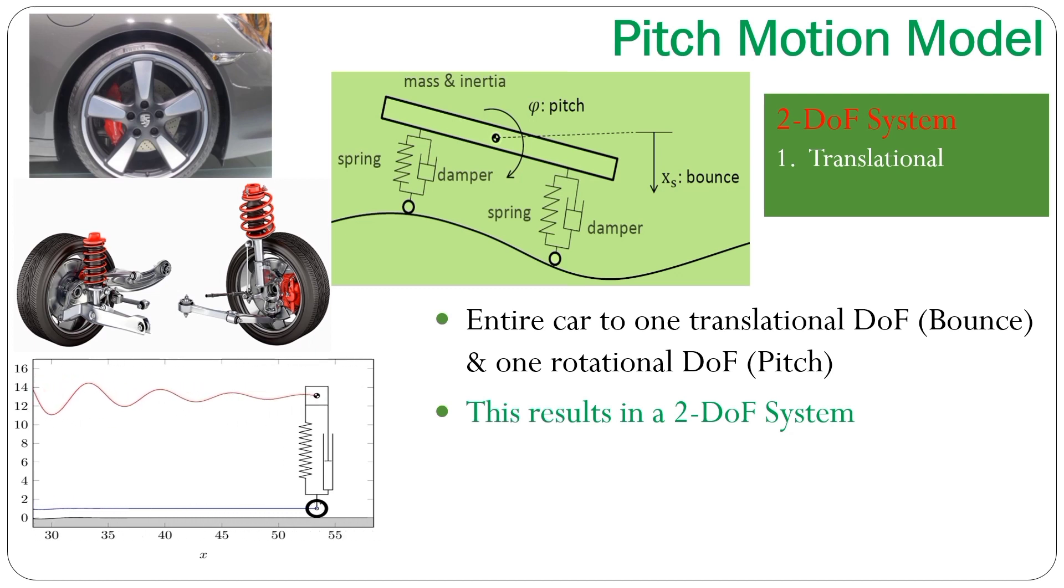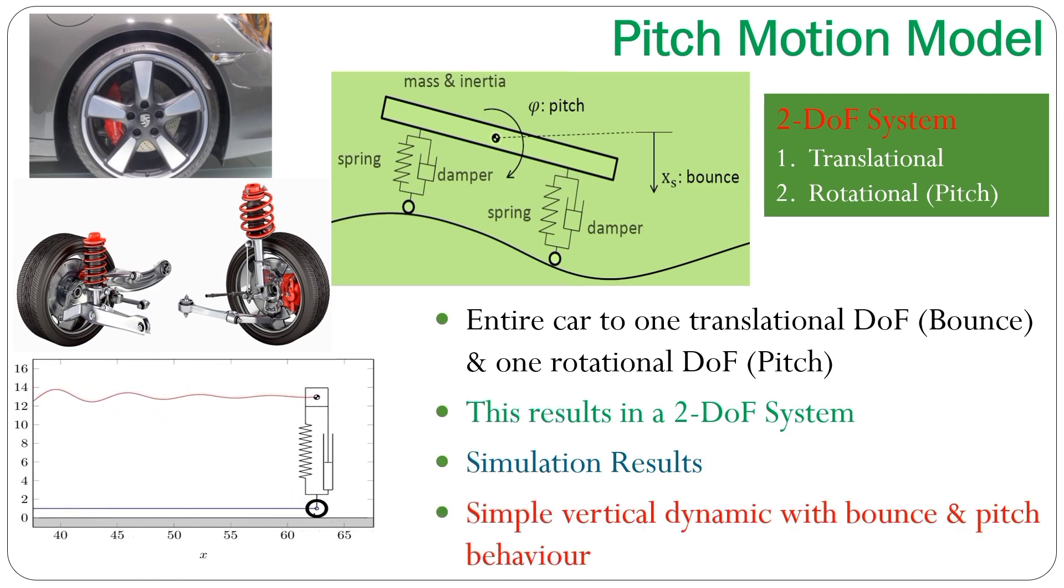So, if we calculate one translational degree of freedom and one rotational degree of freedom, we end up with a two degree of freedom planar system. The simulation results that we can get from this model are simple vertical dynamics with bounce and pitch behavior.